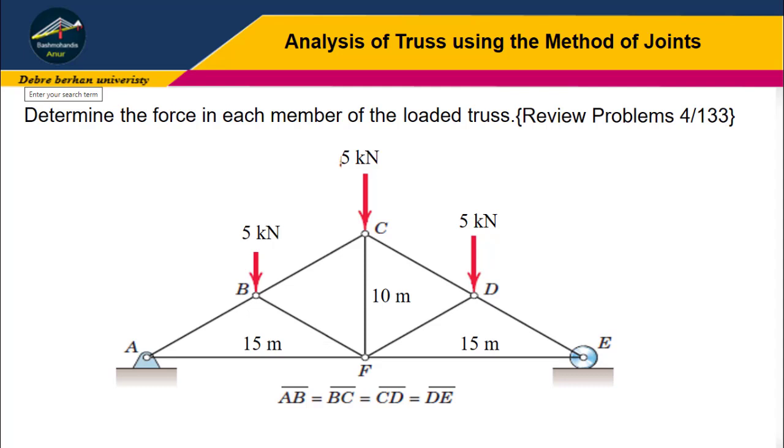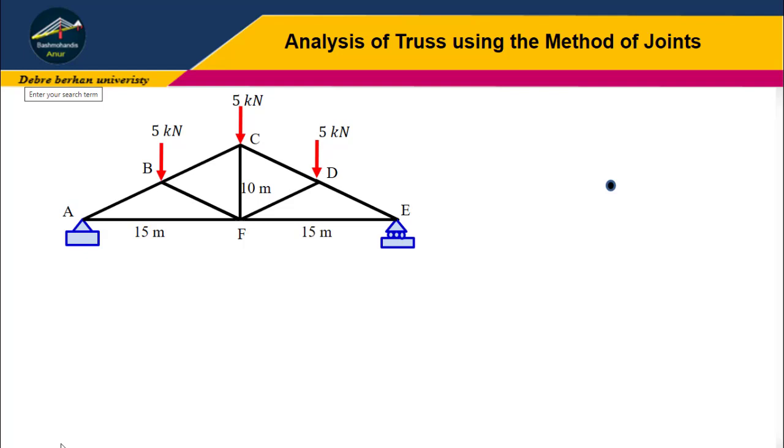Now let us go to the solution. First, let us calculate important parameters like theta and phi. Tan theta equals 10 over 15, therefore theta equals 33.69 degrees. Phi equals 90 degrees minus 33.69, which equals 56.31 degrees.